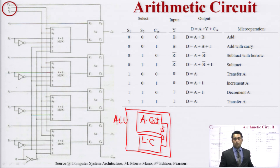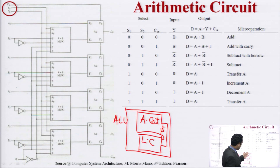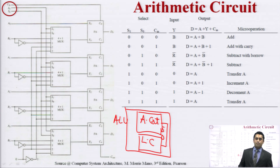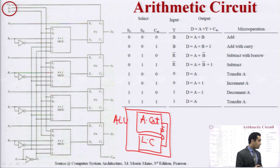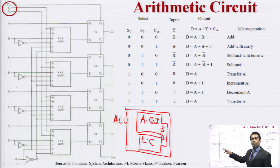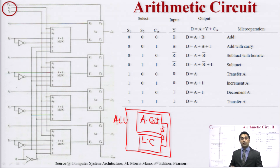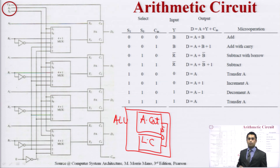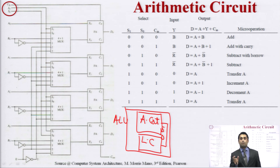This is all about today's class. In the next lecture we will discuss logic operations, shift operations, and how they are represented in the arithmetic circuit. There is one question for you: how would you deal with subtraction in an arithmetic circuit? If we are using an 8-bit number instead of 4-bit, how many multiplexers are required? For a 4-bit number, 4 multiplexers are used. All these slides are from Morris Mano, and the exercise section asks how many multiplexers are required for 8-bit numbers.